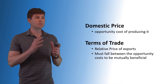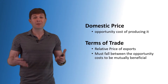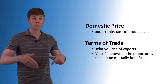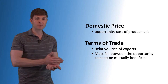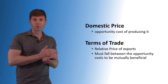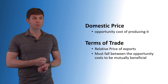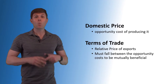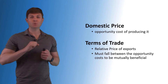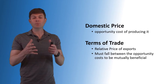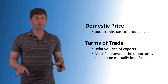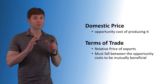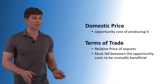Two terms you need to know before we go into this. Domestic price — I'll be referring to this — and that basically is the opportunity cost. What would it cost if I don't trade with another country to produce it here? If I'm producing one of this item, what am I giving up? Now, Terms of Trade is the relative price of exports — what am I getting in exchange for what I'm giving? In order for Terms of Trade to be mutually beneficial, it needs to fall between the opportunity cost. That's what I'm trying to get you to understand in this presentation.